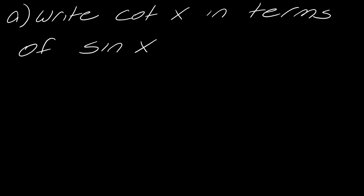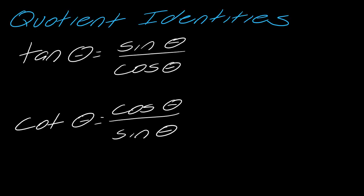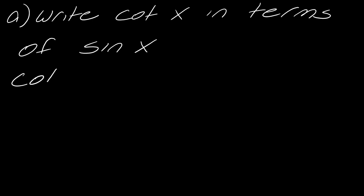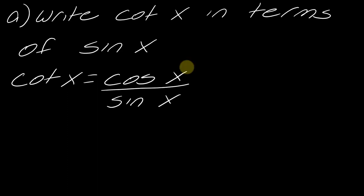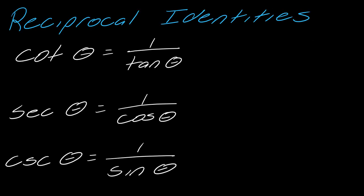So write cotangent in terms of sine x. A lot of times when we think of cotangent, we think of the quotient identity — cosine over sine. I know it's supposed to be all in terms of sine, but this gives us a place to start. So let's just write that out. When you do problems like this, they're a little bit of a process. I've got sine here, so the question is: can I write cosine in terms of sine using the fundamental identities?